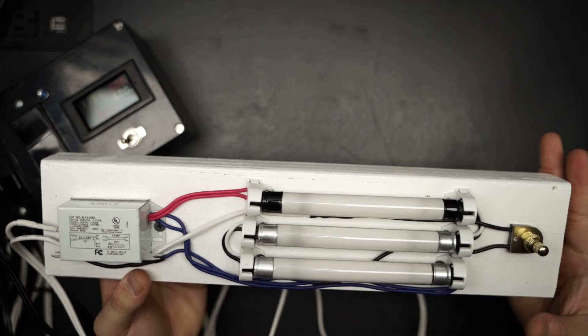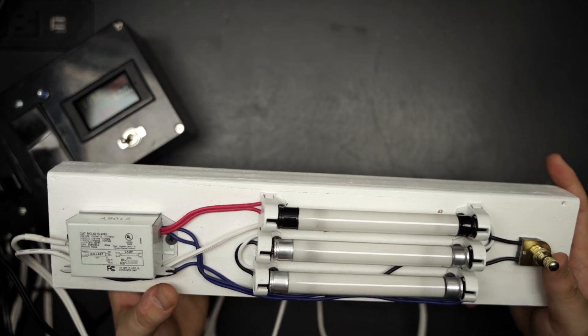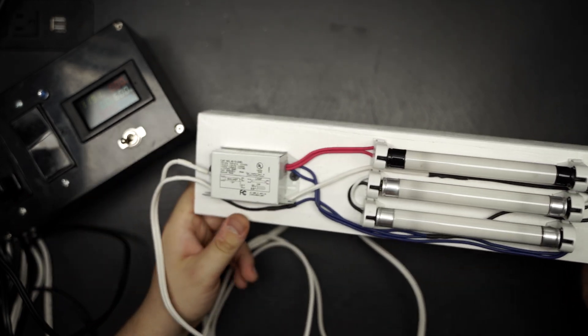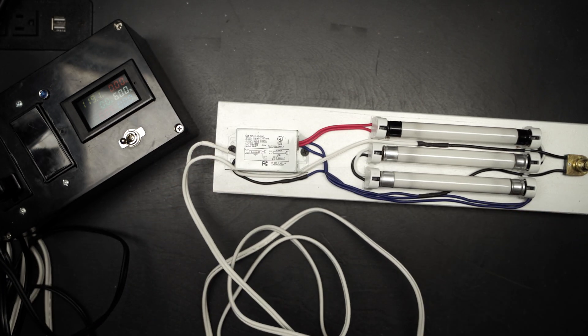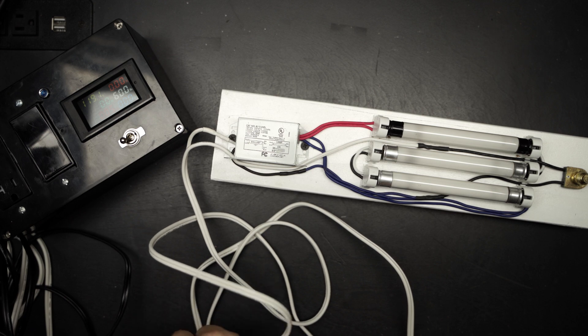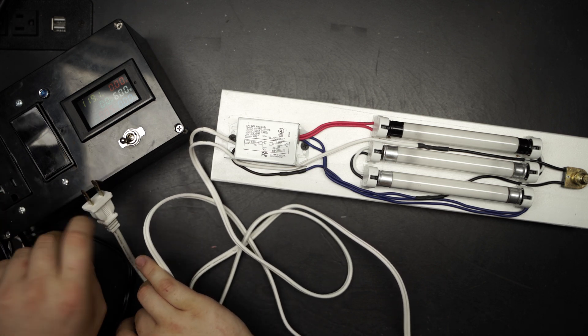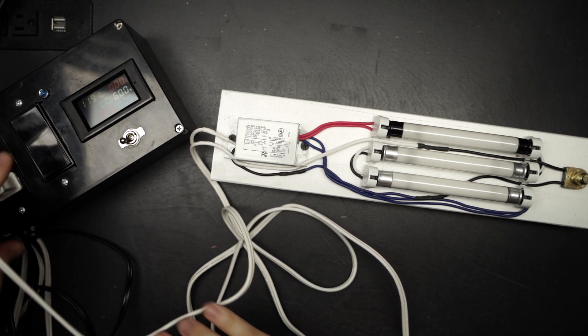And this is just a standard rotary switch that I glued to the 2x4. And yeah, I think this looks pretty cool. These are cool white bulbs. It's about 4,100K. I'll go ahead and plug it in.